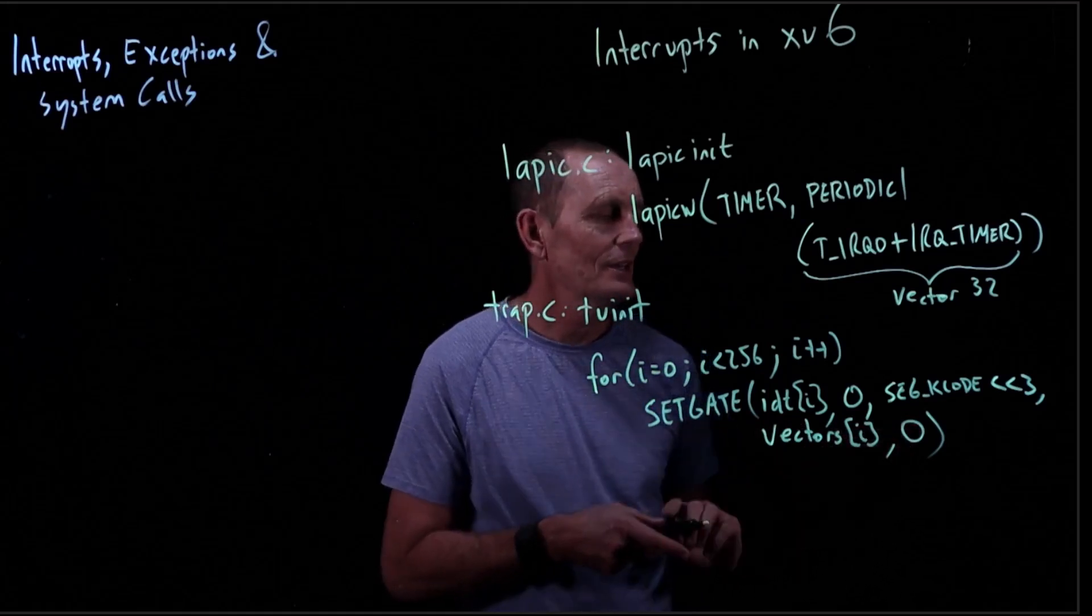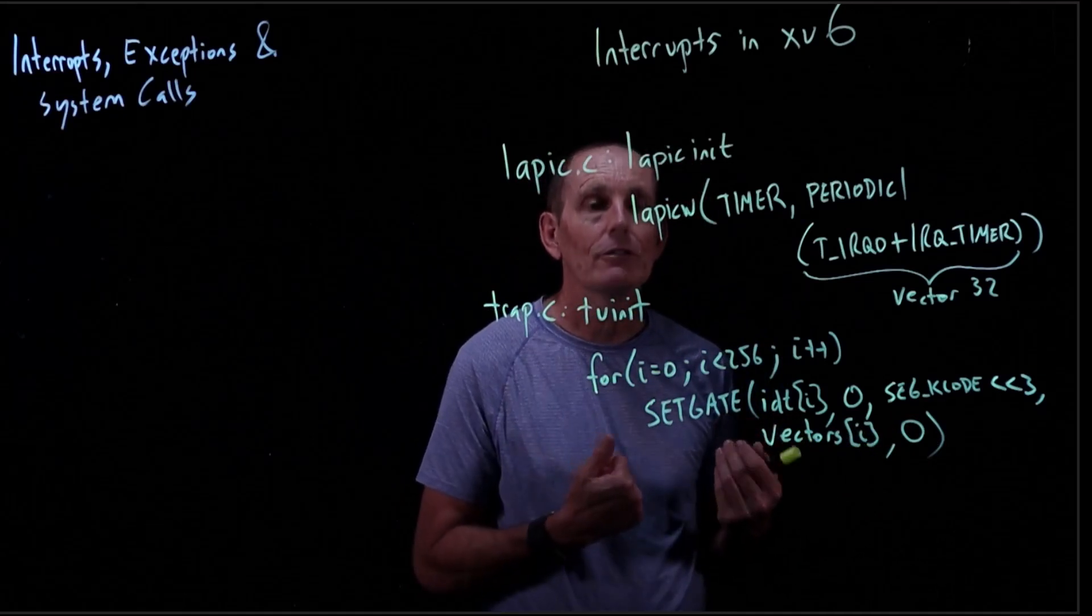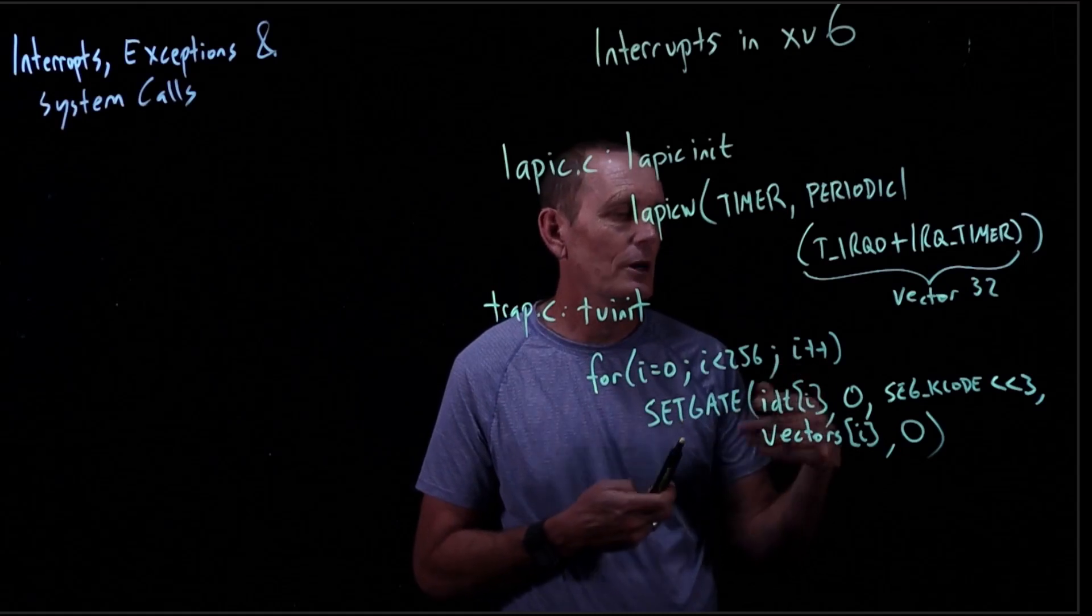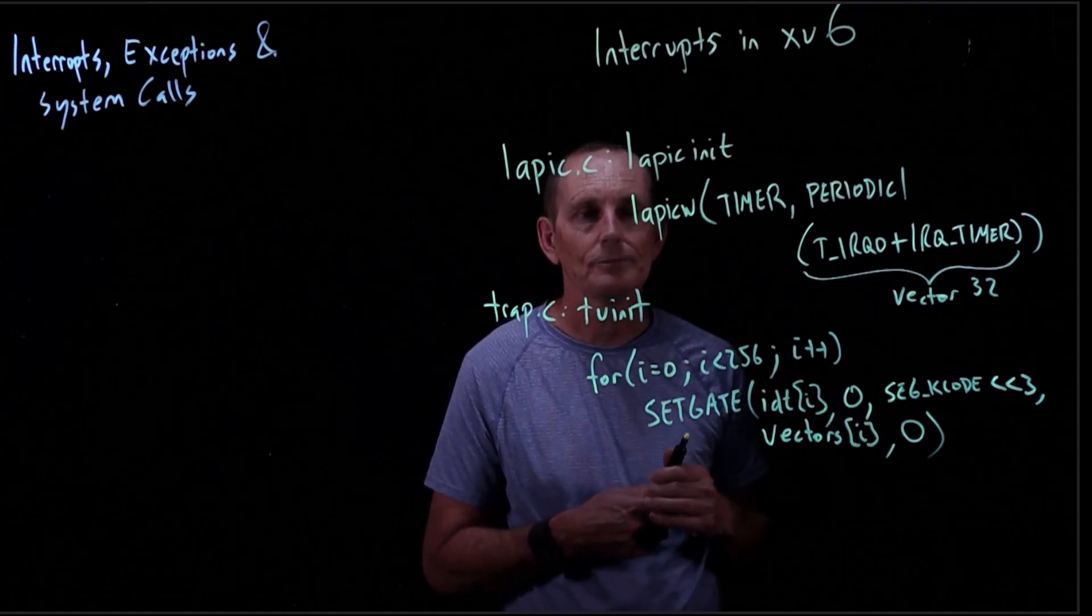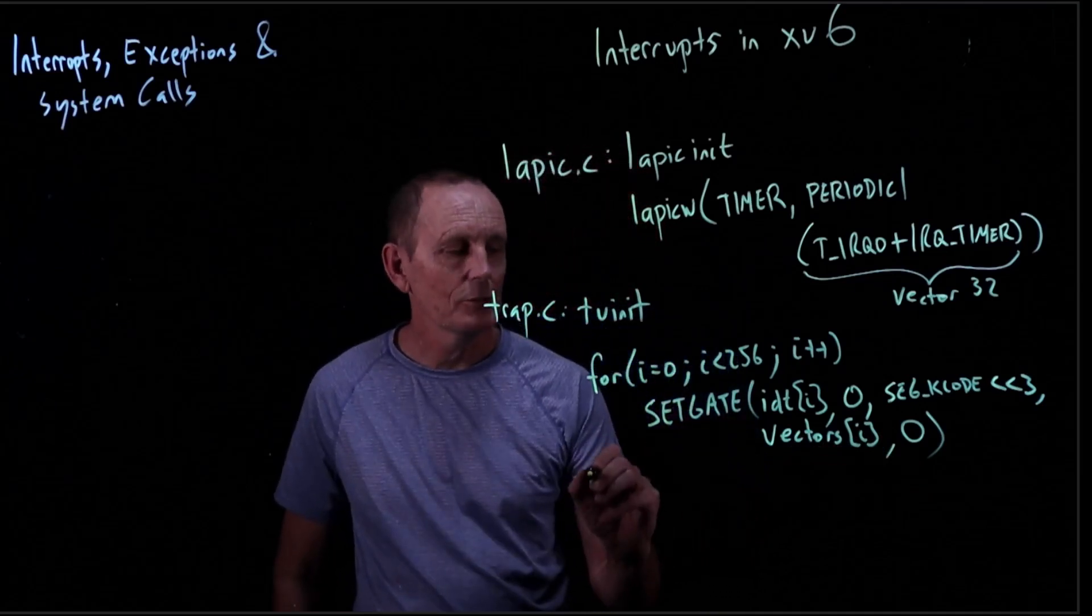This one says you can't directly generate it from user mode. So you can't do an int 0 or an int 1 or an int 2 for all these numbers. That's not allowed from user mode. But then the other thing we do is we set one up for system calls.